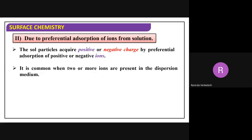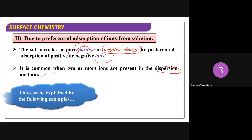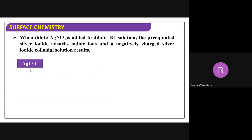The sol particle acquires positive or negative charge by preferential adsorption. If they adsorb a positive ion, they get a positive charge; if they adsorb a negative ion, they get a negative charge. This is common when two or more ions are present in the dispersion medium. For example, when dilute silver nitrate is added to dilute potassium iodide, the precipitated silver iodide adsorbs iodide ions, giving a negatively charged silver iodide colloidal solution.